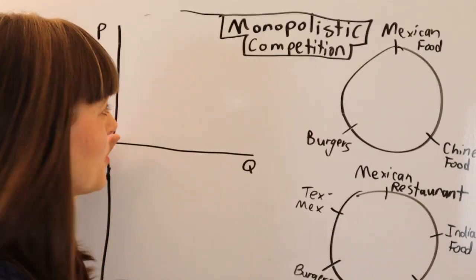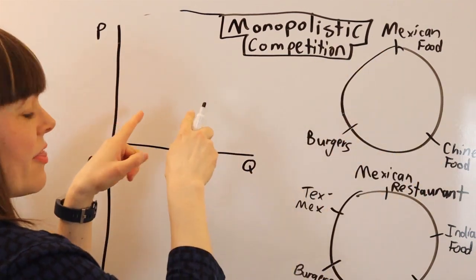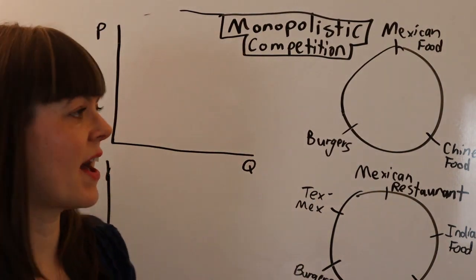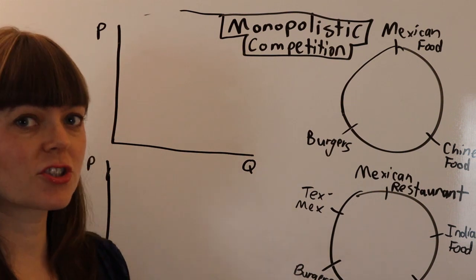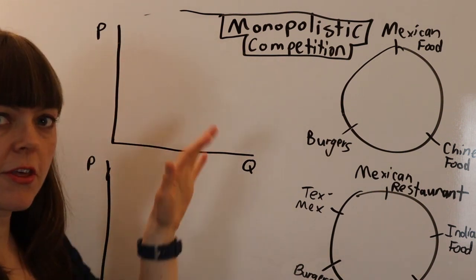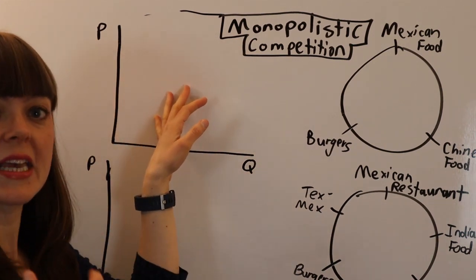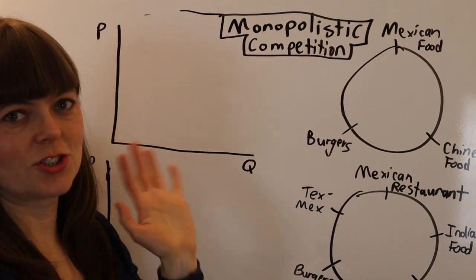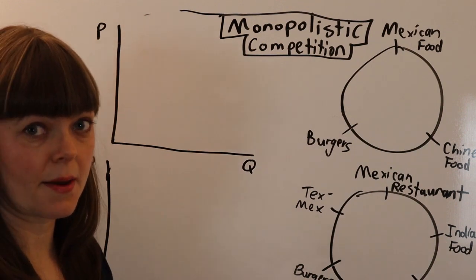We've zoomed in on the top case — a situation where there's three restaurants in town, and this monopoly model will be for one representative firm in that industry. It's going to have a demand curve, a marginal cost curve, and an average total cost curve. The elasticity of demand will be most inelastic in this case, and I'm going to make it pretty inelastic just to show you the difference between the three graphs.